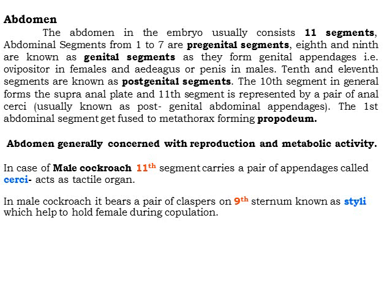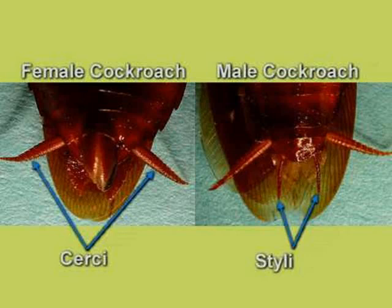The first abdominal segment gets fused to the metathorax forming a propodium, which is a very important characteristic of the insect abdomen; the abdomen is generally concerned with reproduction and metabolic activity. In the case of the male cockroach, the 11th segment carries a pair of appendages called cerci, which act as tactile organs. The male cockroach also wears a pair of claspers at the 9th segment known as styli, which help to hold the female during copulation. In the female cockroach, there are also specific abdominal appendages that help during mating.